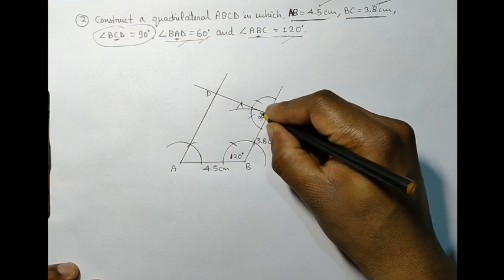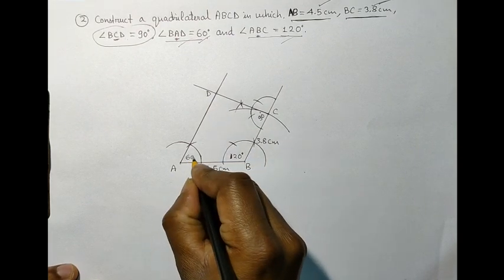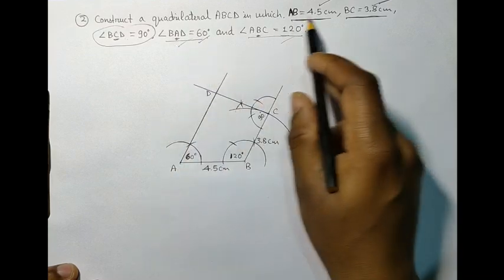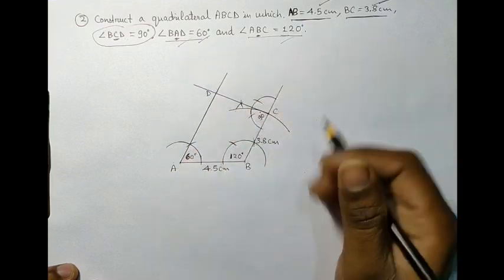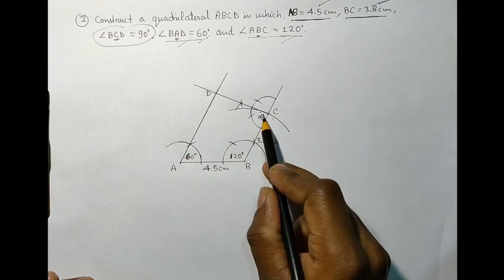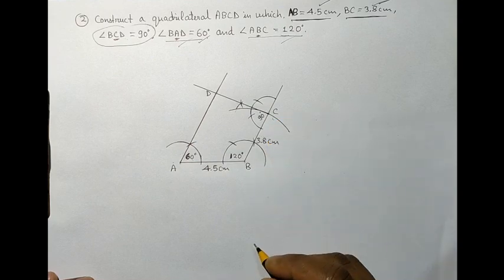So, we have our measurement, 90 degree at C. At A, we have 60 degree. And, the remaining measurements, which is AB and BC are given. So, this is the required quadrilateral.